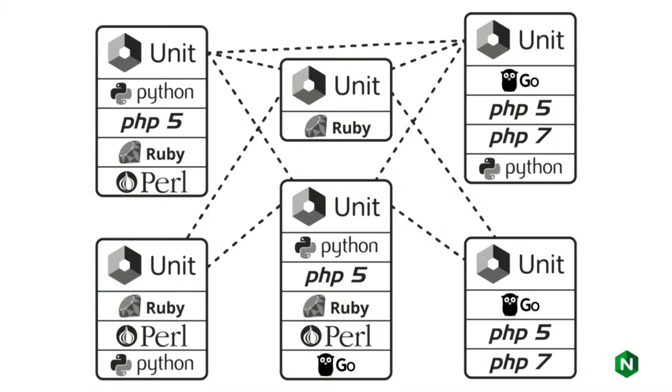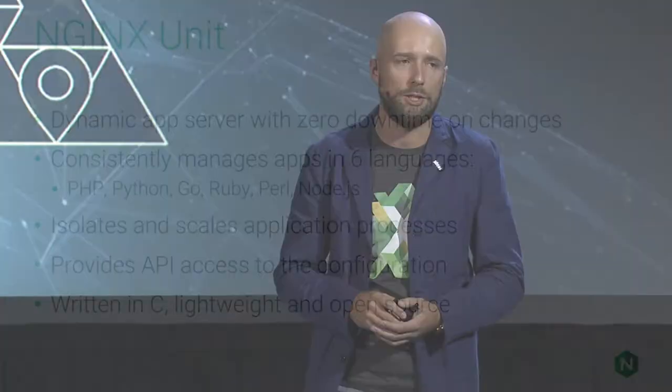We introduced UNIT last year at this conference, and what UNIT brought to us is a new way of looking at the application server. UNIT is dynamic, meaning it has zero downtime on any changes you perform to its configuration — there is no concept of reloading UNIT. It also gives you six languages it can run applications in. You just give it code written in PHP, Python, Perl, Go, Ruby, or — as of today — Node.js. This brings an unprecedented level of consistency across different application stacks.